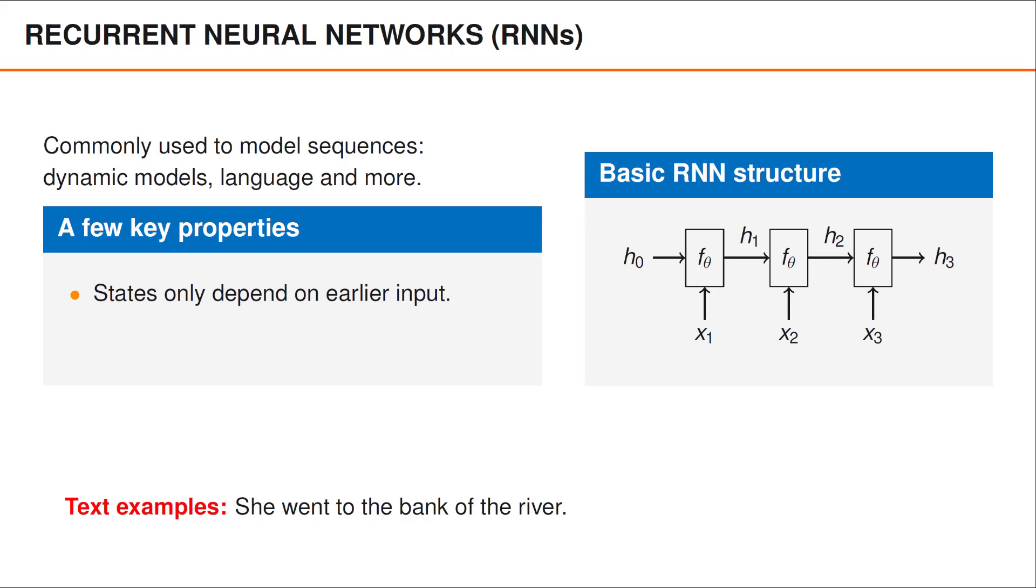A first property that we can observe is that the hidden state only depends on the input up until the current time. For instance, in the example, she went to the bank of the river.